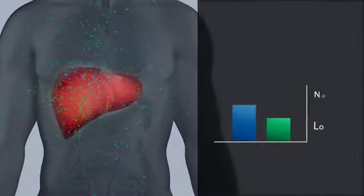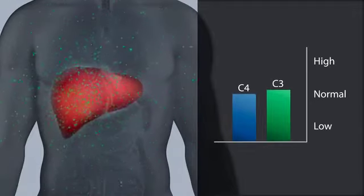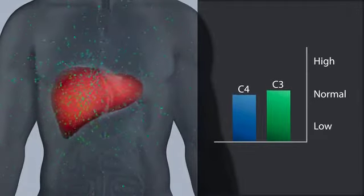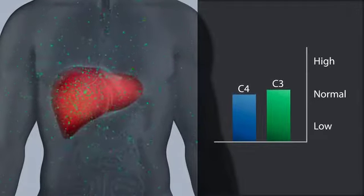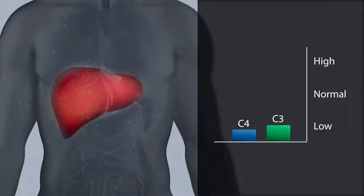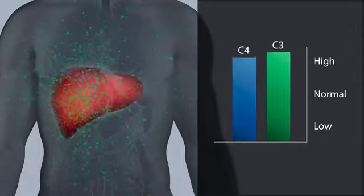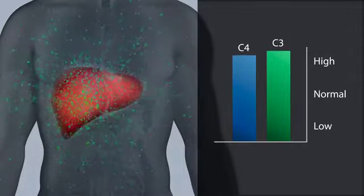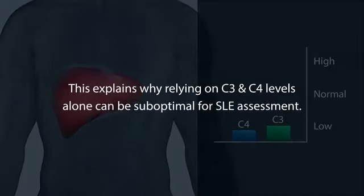C3 and C4 originate from the liver and are commonly measured for insight into SLE disease activity. However, this approach suffers from several factors including changes in the amounts produced by the liver, increases caused by acute phase inflammation, and individual variability. This explains why relying on C3 and C4 levels alone can be suboptimal for SLE assessment.